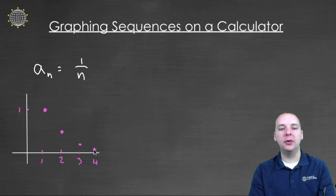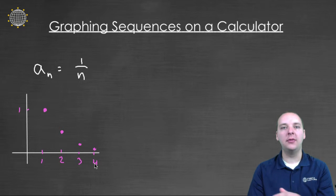So if your sequence is relatively simple, you can graph these by hand because you take the n's, the integers 1, 2, 3, 4, 5, you plug them in, you get y values, and you plot them.